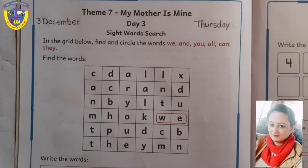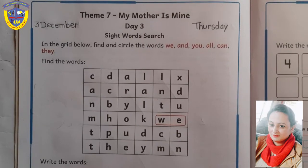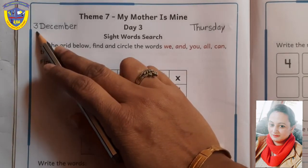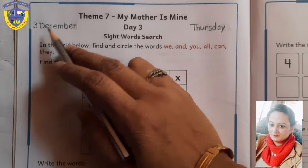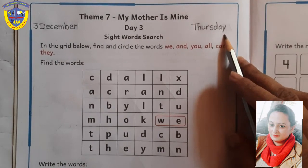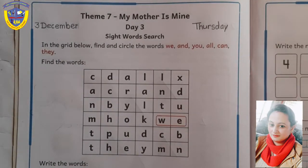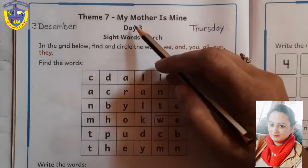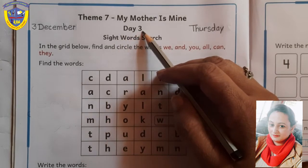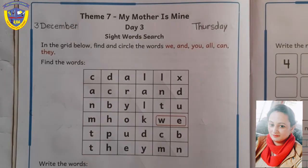Good morning, my lovely kids. How are you? Fine? Okay. Students, today's date is 3 December. Day is Thursday. Theme 7. My mother is mine. Day 3. At page number 2.